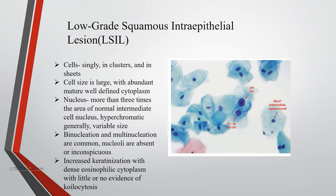In low-grade squamous intraepithelial lesion (LSIL), cells are arranged singly, in clusters, and in sheets. Cell size is large with abundant, mature, well-defined cytoplasm. The nucleus is more than three times the area of a normal intermediate cell nucleus, and is generally hyperchromatic with variable size. Multinucleation and binucleation are usually common; nucleoli are absent or inconspicuous. Increased keratinization with dense eosinophilic cytoplasm with little or no evidence of koilocytosis is usually seen.